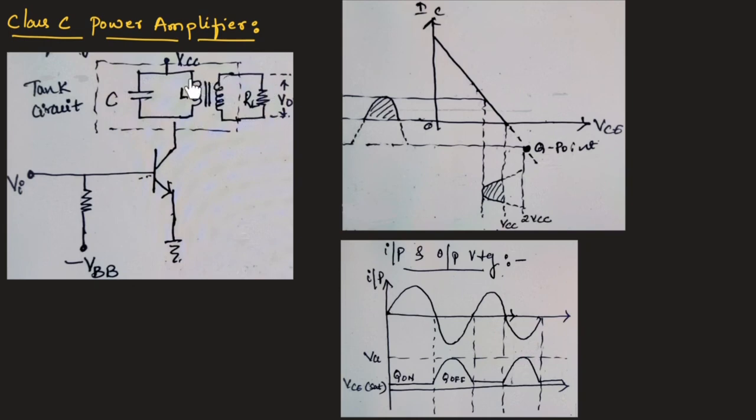Here, the tank circuit is used as a load, where we will be measuring the output voltage. For a class C operation, the transistor has a reverse bias across base and emitter terminal, since we are connecting minus VBB across the base terminal.